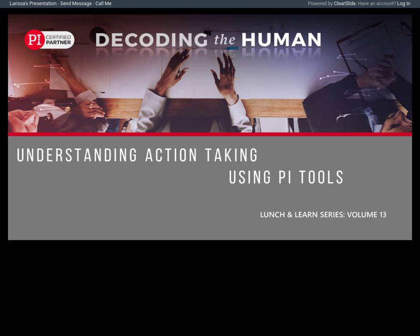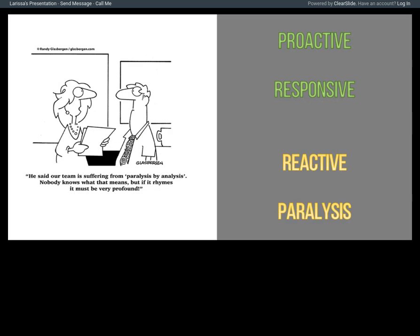When we look at how people take action, there are really two different responses. We look at it from a proactive and a responsive perspective. Some people are more inclined to be proactive — picking up the ball, driving change, moving things forward — while others are created to be more responsive: taking a breath, looking at the whole picture, putting together a plan. We're going to look at how that can be derived from PI and how the other drives impact that.